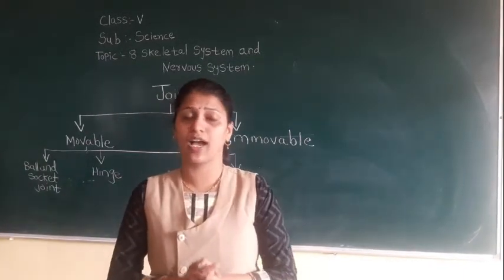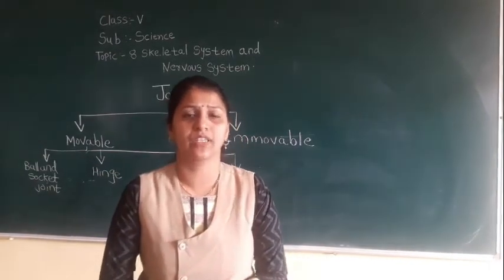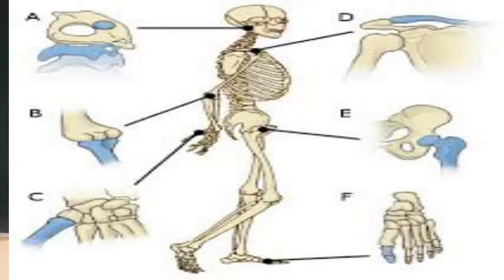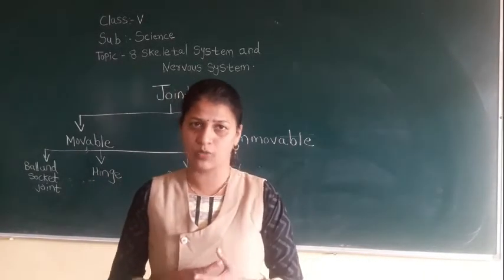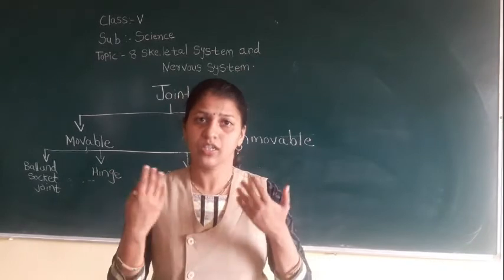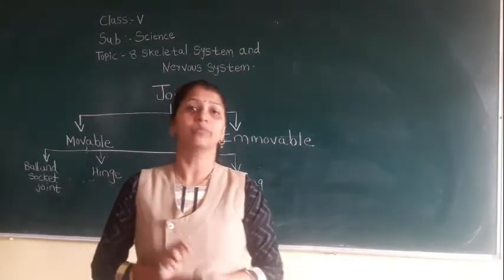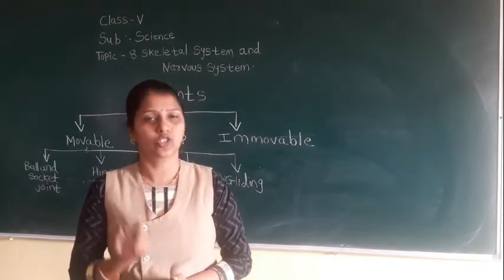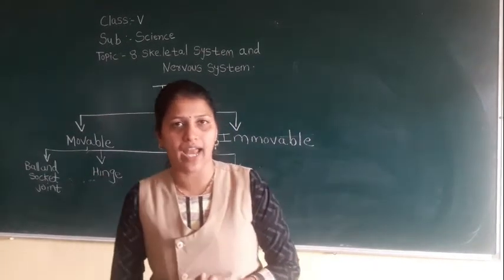If you look at the skeletal system, it consists of a number of bones — the skull, backbone, and others. These bones are separate, but in our body they are joined together. When bones meet each other, that meeting point is called a joint.